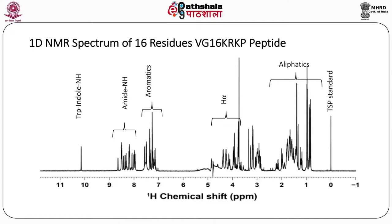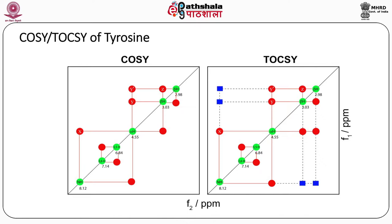The 1D NMR spectrum of our reference peptide VG16KRKP, which has 16 residues, is shown. Around 10 ppm you see the peak from the side chain of tryptophan's indole NH. Between 8 and 9 ppm you see the various amide NHs. Around 3.5 to 5 ppm you get the signal from H alphas connected to C alphas, and between 0.5 to 2.5 ppm you see peaks from various aliphatic protons. The standard used for aqueous sample is TSP at 0 ppm. The 1D spectrum is very complex for any gainful analysis.